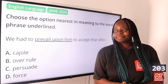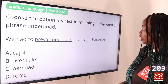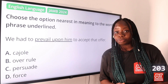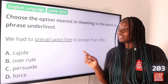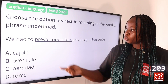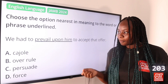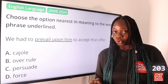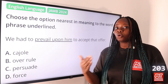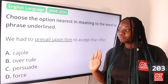Question 203: Choose the option nearest in meaning to the underlined word or phrase: 'We had to prevail upon him to accept that offer.' Option A: cajole, B: overrule, C: persuade, D: force. The answer is option C, persuade. To prevail upon someone means to persuade or convince someone to accept your point of view. Note that cajole, although it means to persuade, also implies persuasion using flattery, so persuade is the nearest in meaning to 'prevail upon.'